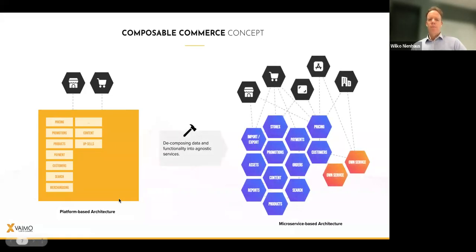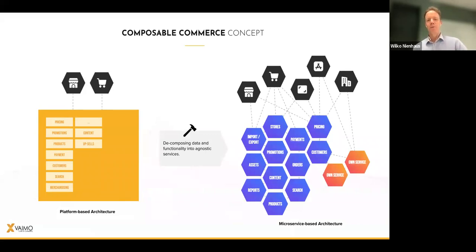Compared to a platform-based architecture, the composable architecture is generally speaking based on microservices. Some of them might evolve to be larger services than micro, but we'll stick with that for now. Each of these different services are isolated from the other ones, and they are agnostic building blocks that can operate independently, but of course also communicate with one another.